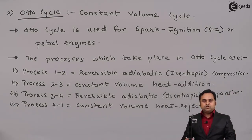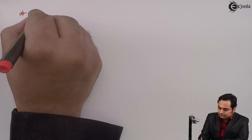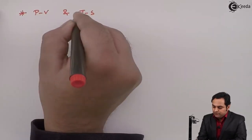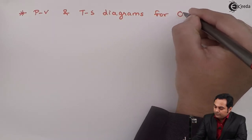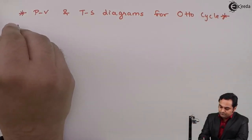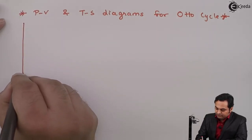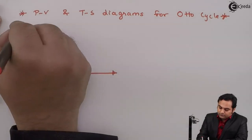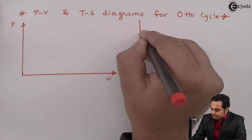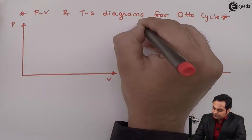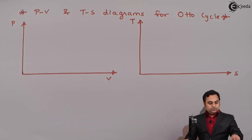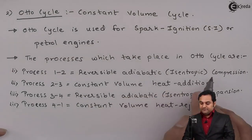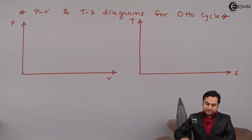These four processes can be shown on a PV and TS diagram — that is pressure-volume and temperature-entropy diagram for the Otto cycle. Here we have the PV diagram showing pressure versus volume, and the TS diagram showing temperature versus entropy. The first process is reversible adiabatic, that is isentropic compression, which can be shown on the PV diagram.